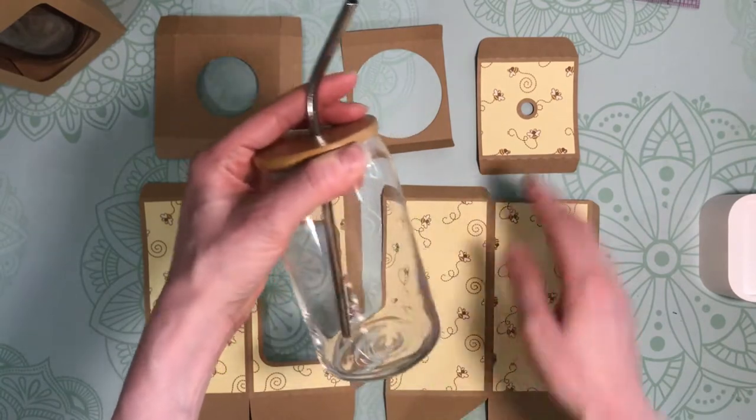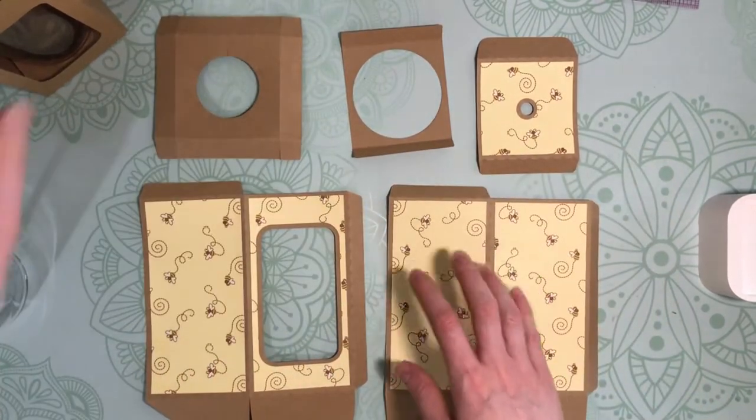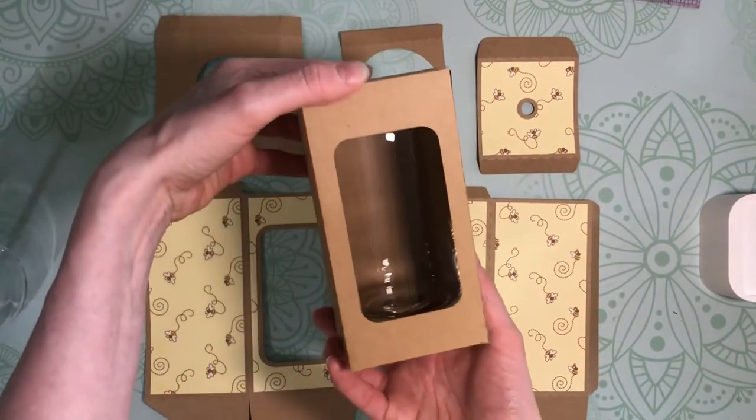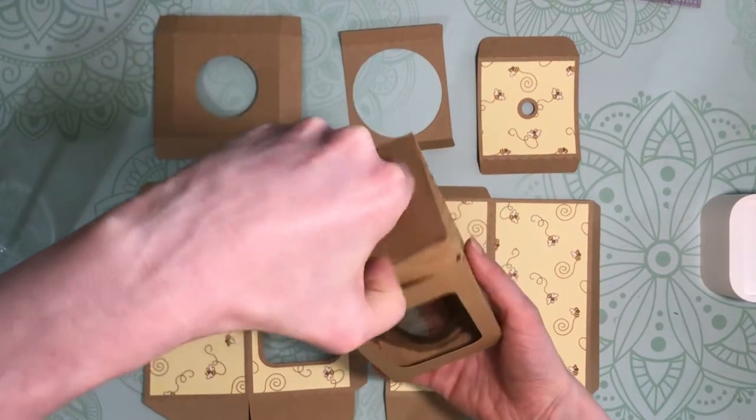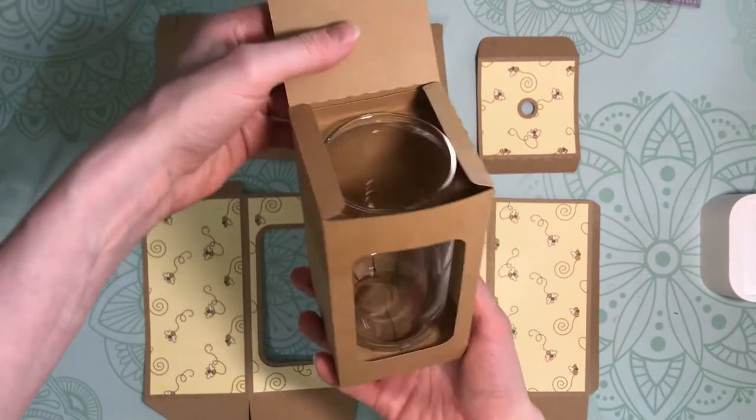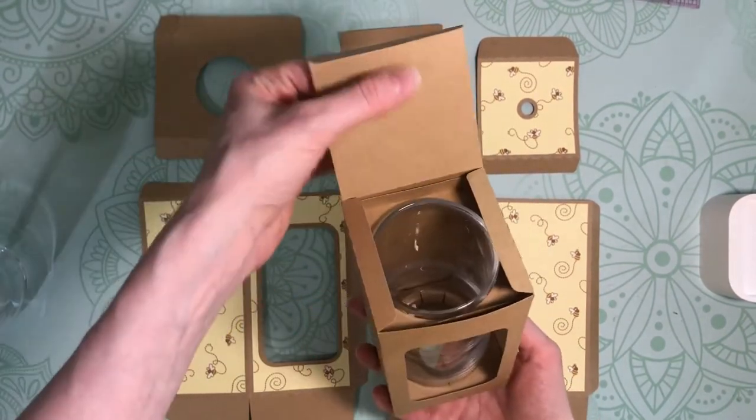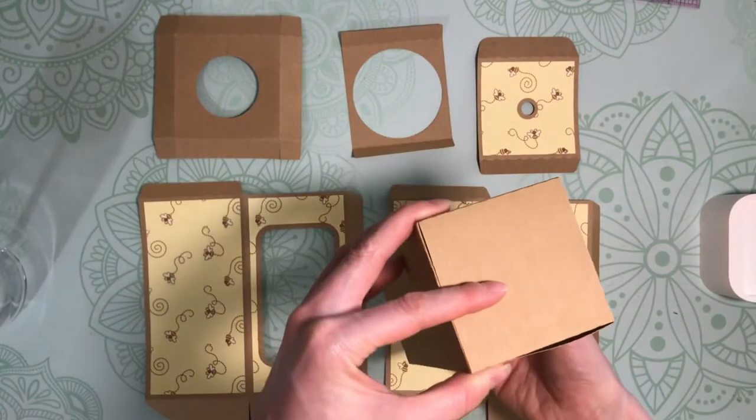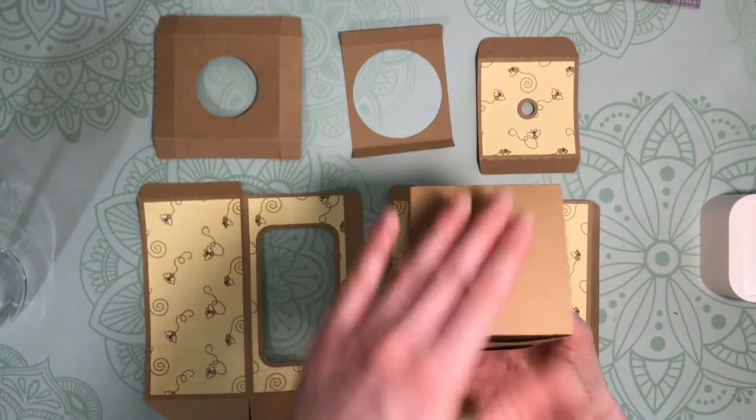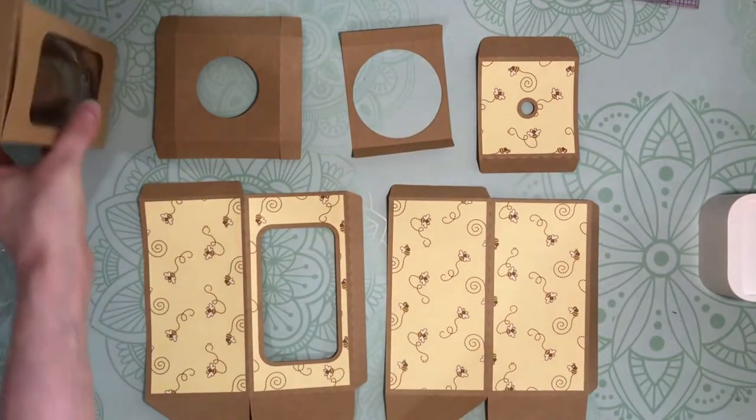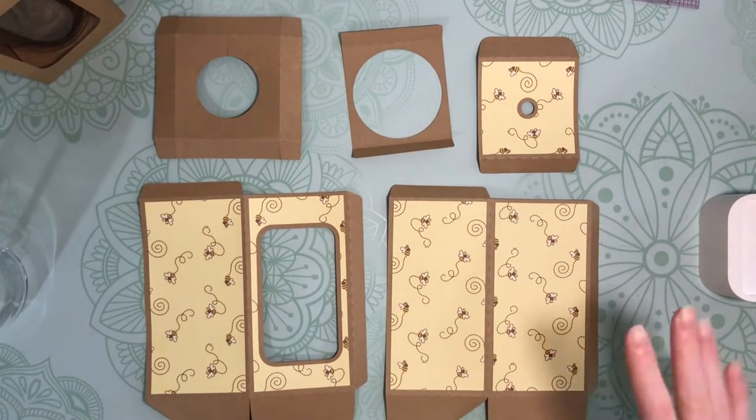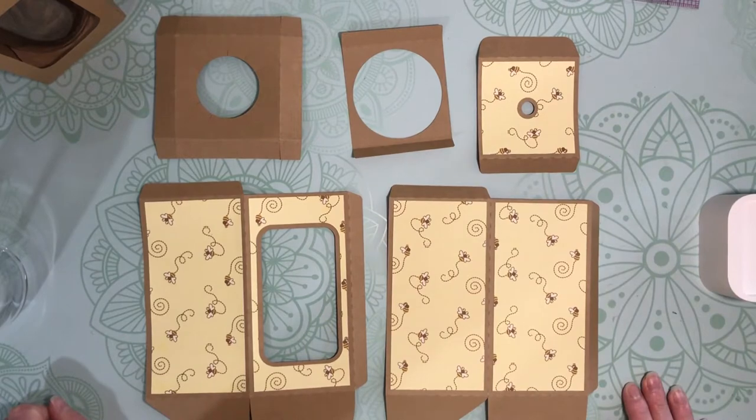This box comes with a solid lid to hold just the glass itself, so this glass does not have any kind of lid or straw with it. You get one file and it comes with the solid lid and the lid with a hole in it for a straw, so you get to pick which lid you want for the glass you're using.